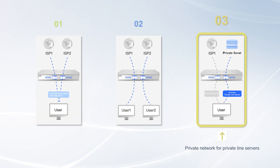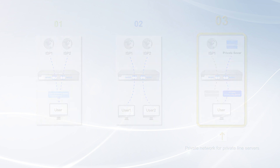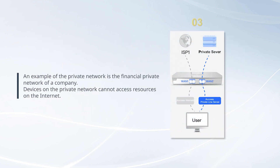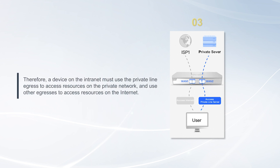Third, private network for private line servers. An example of the private network is the financial private network of a company. Devices on the private network cannot access resources on the internet. Therefore, a device on the internet must use the private line egress to access resources on the private network, and use other egresses to access resources on the internet.